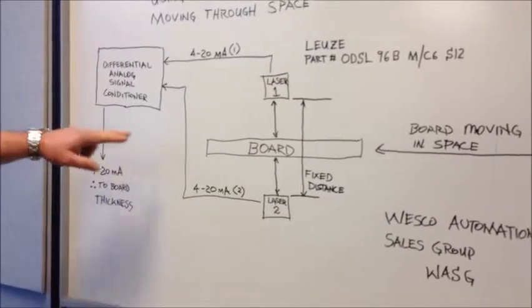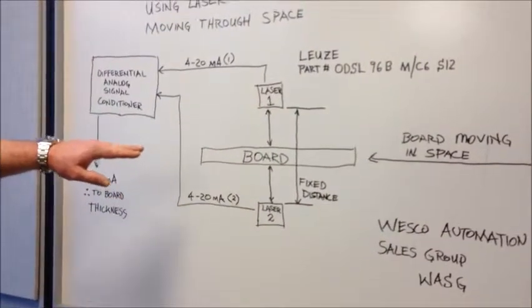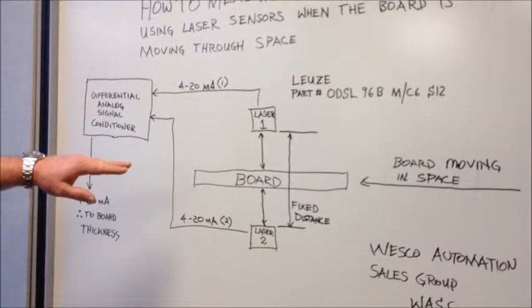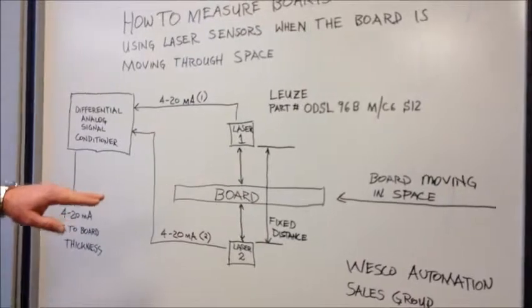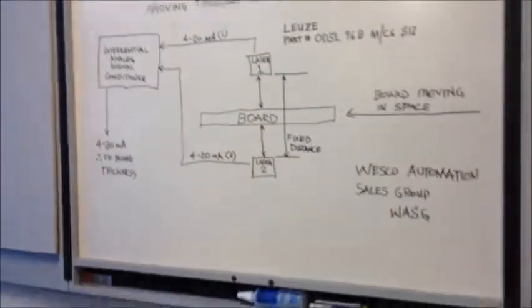These laser sensors move very fast, so they can pick up something as it's moving on the fly, it doesn't have to be stationary, and they're very accurate. Let's go back to the actual sensor itself and look at the application.